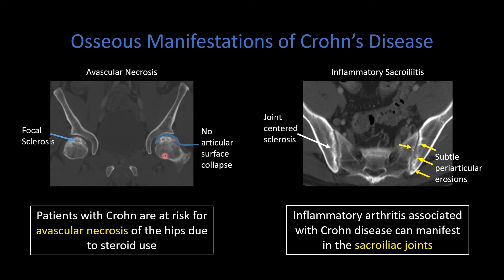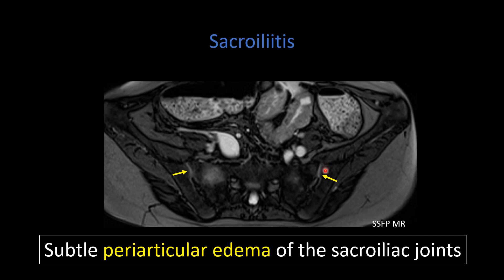Inflammatory sacroiliitis is a very common finding in patients with inflammatory bowel disease and Crohn disease. Look at the sacroiliac joints for joint-centered sclerosis and subtle periarticular erosions. On MRI, you may see hyper-enhancement along the joint line on T1 gradient recalled echo post-contrast fat-saturated imaging. This is an example where we have periarticular edema along the joint line on a T1 post-contrast sequence. This can be asymmetric — it does not have to be symmetric. If you see edema or enhancement on MRI, you can raise the suspicion of inflammatory sacroiliitis.